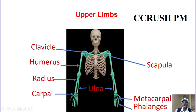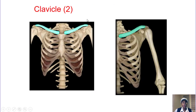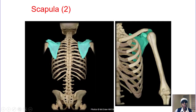Then let's go to the upper limb. The acronym is CRUSH PM — you have a crush on the prime minister. CC: clavicle and carpal. RU: radius and ulna. SH: scapula and humerus. PM: phalanges and metacarpal. The clavicle is anterior — the collarbone — and the scapula is the shoulder blade on the back. C comes before S: clavicle front, scapula back.